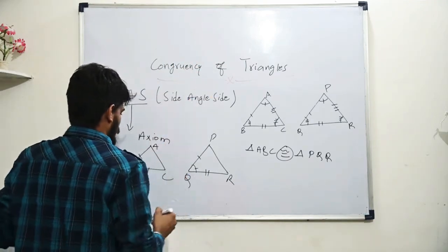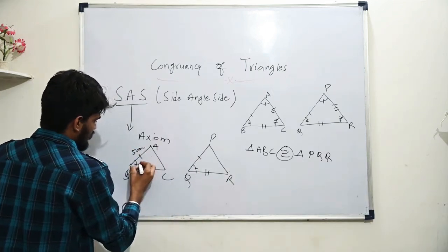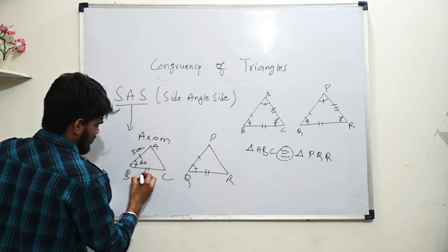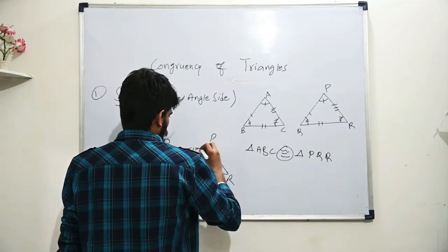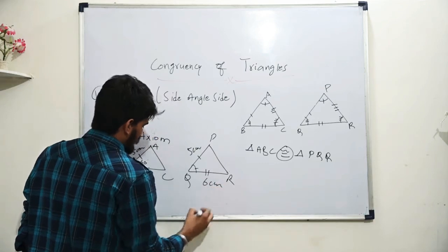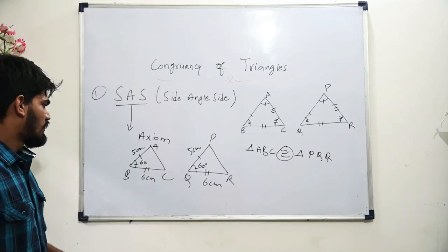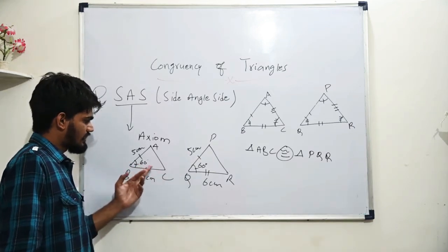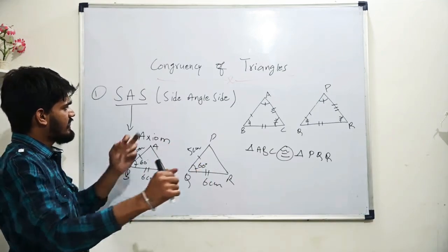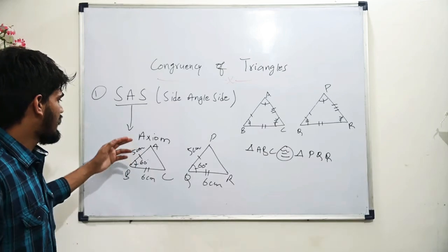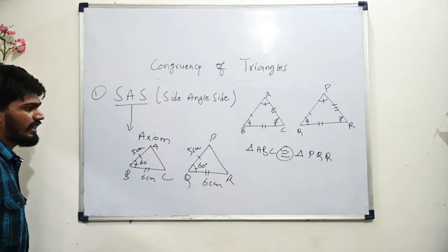We can take one example: if one triangle has sides five centimetres and six centimetres with an included angle of sixty degrees, and another triangle also has sides five centimetres and six centimetres with an included angle of sixty degrees, then side five equals five, angle sixty equals sixty, side six equals six — Side Angle Side. SAS is accepted as true and is an axiom, but it is not the only condition we have for congruency.